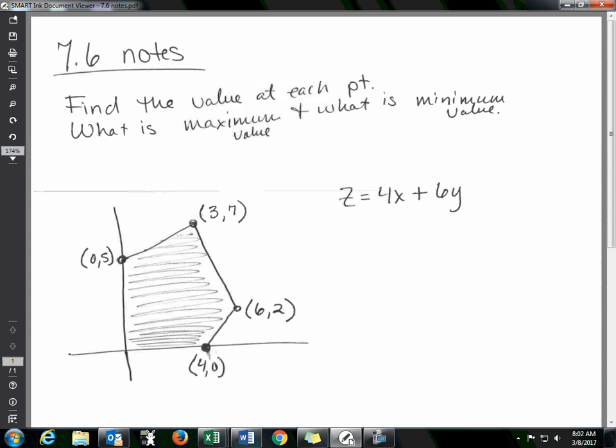We've already graphed those equations from the problem, and this is the graph. This is where all the lines cross on your graph, and we're given 0,5, 3,7, 6,2, 4,0. And we're given what's called a Z function or an objective function.